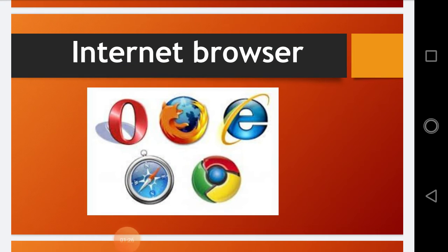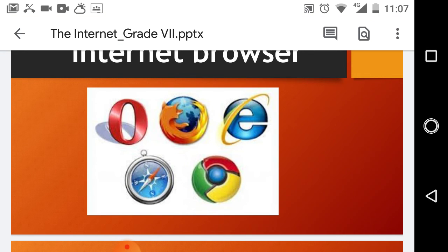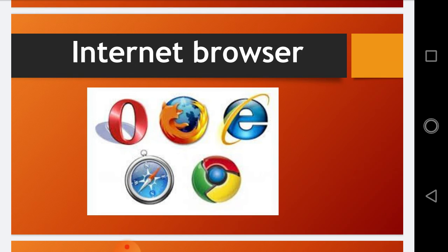An internet browser is an application software that we use to connect to the internet. You can search for different information using an internet browser, download different software, upload your information, share with your friends, and chat also. So an internet browser is basically a platform to connect to the internet.